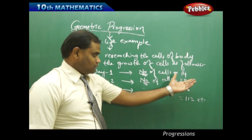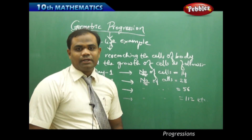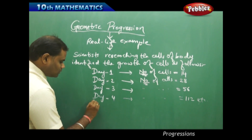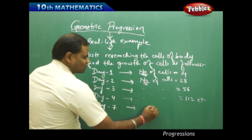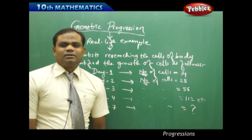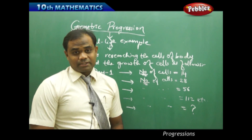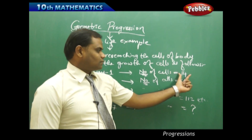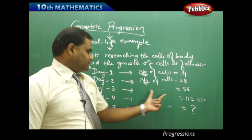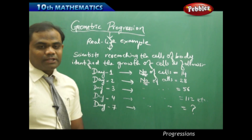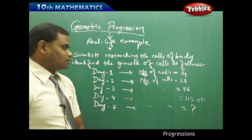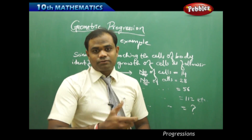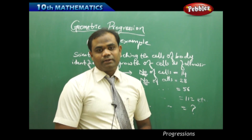This was the conclusion they could make on the number of cells which were increasing. Without calculating how many cells there were for each day individually, they wanted to assume how many cells would grow on day seven in the future. This was something through which they wanted to use mathematics. They wanted to know how many cells were growing on the seventh day using the first four data points.